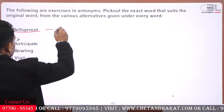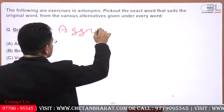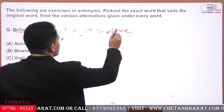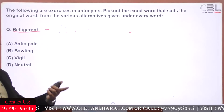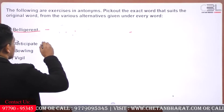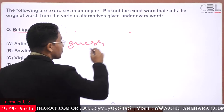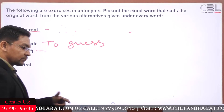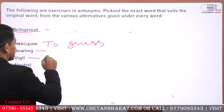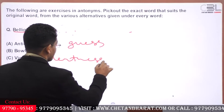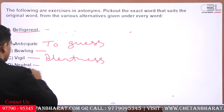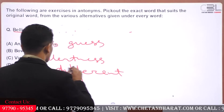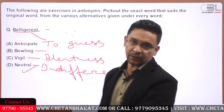Belligerent means aggressive. So because the word means aggressive, we need to find a word that means something opposite to it. Vigil means alertness — the department of vigilance. Neutral is the correct answer, means indifferent. So a person who is indifferent or who is neutral will not be belligerent, will not be hostile to you.